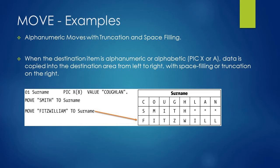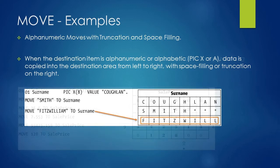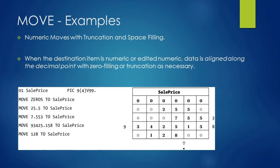In the second example, we are trying to assign the value 'Fitzwilliam' to the SURNAME variable. Fitzwilliam consists of 11 characters. The MOVE statement fills SURNAME from the leftmost character: F, I, T, Z, W, I, L, L — and the remaining characters 'I', 'A', 'M' are beyond the boundary of SURNAME and will be lost. This is truncation. Note that when the destination item is alphanumeric or alphabetic (PIC X or PIC A), data is copied left to right with space filling or truncation on the right.